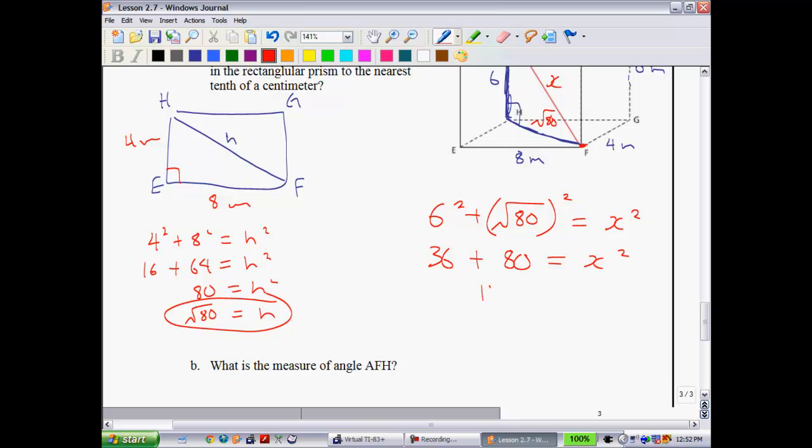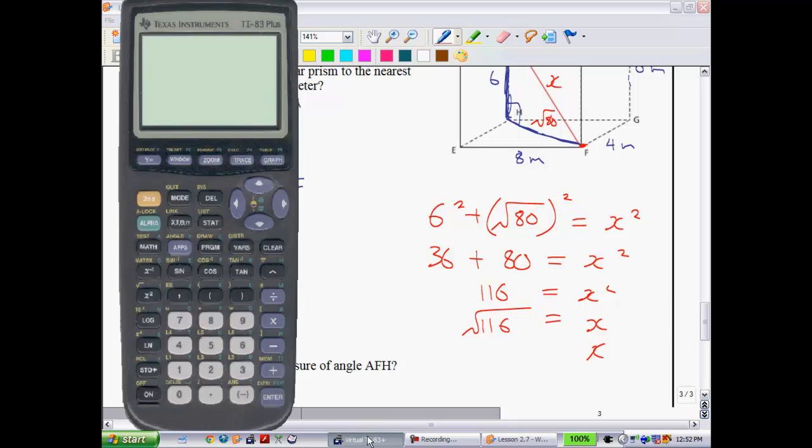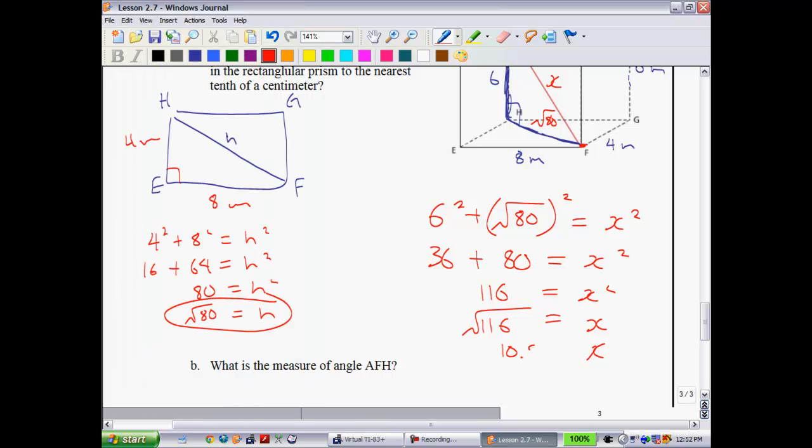You can check with your calculator if you don't believe me. Adding these together, we have 116 is equal to X squared. Or, X is equal to the square root of 116. And that would be a good final answer for me. It's at the nearest tenth of a centimeter though, so we should put it into our calculator. We'll take the square root of 116. And to the nearest tenth of a centimeter, we get 10.8. Actually, it said centimeter. I guess I should label these as centimeters. Small fix. Keep it at 10.8 centimeters, like so.